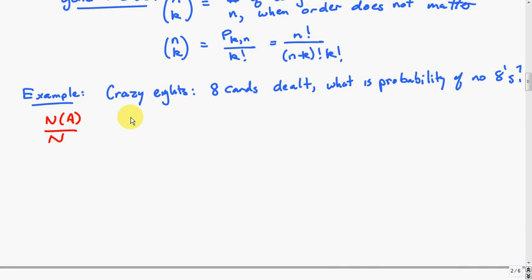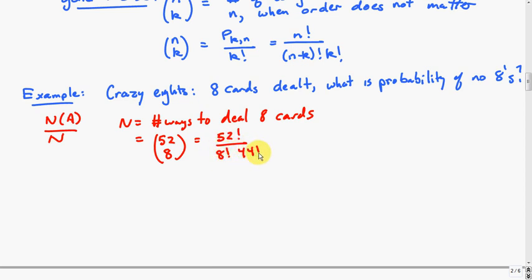Let's work on the denominator first. n is the number of ways to deal an 8 card hand. That would be 52 choose 8, since order doesn't matter. It doesn't matter what order the cards are dealt in. We're wondering how many different ways we can get 8 cards out of 52. That's 52 factorial over 8 factorial times 44 factorial.